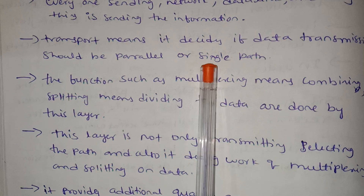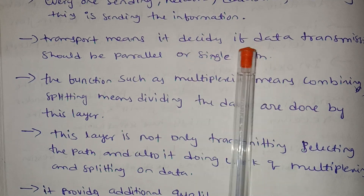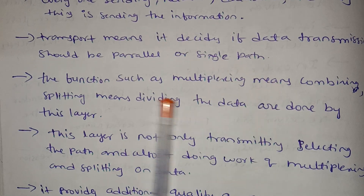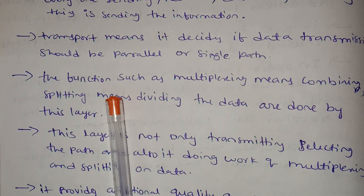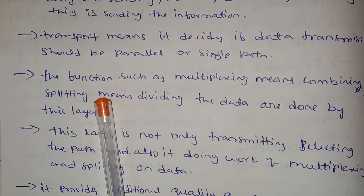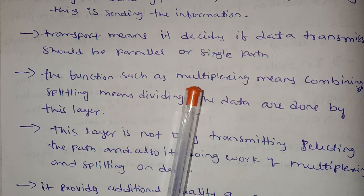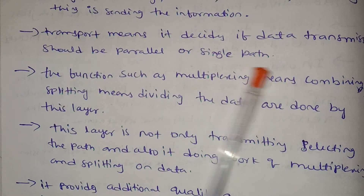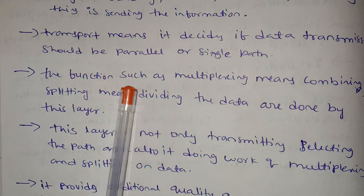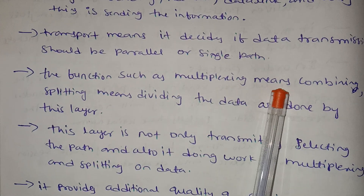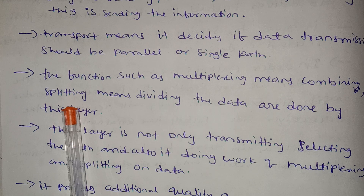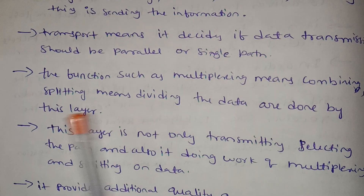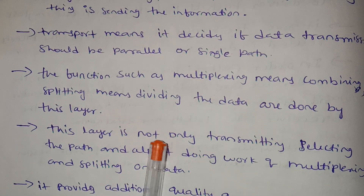Transport layer decides whether data transmission should be parallel or single path. Data can go through a parallel path or a single path, and this is determined by the transport layer.